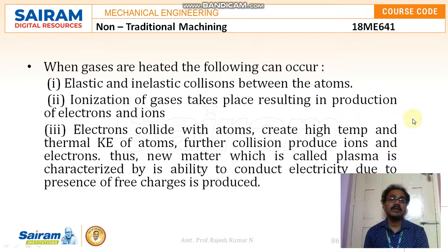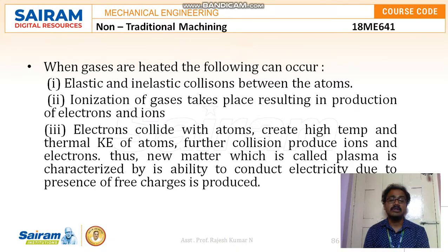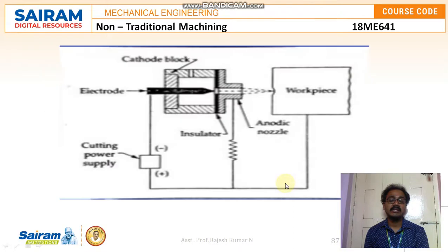When gases are heated, elastic and inelastic collisions between the atoms occur. Ionization of the gases takes place, resulting in the production of electrons and ions. Electrons collide with atoms, creating high temperature and thermal kinetic energy. Further collisions produce more ions and electrons. Thus the new matter called plasma is characterized by its ability to conduct electricity due to the presence of free charges.